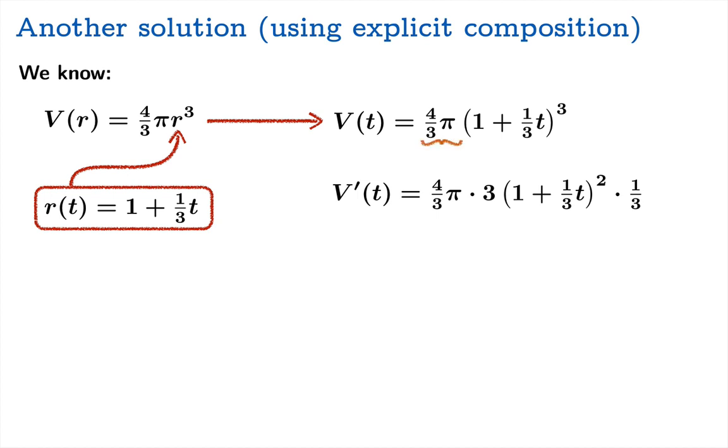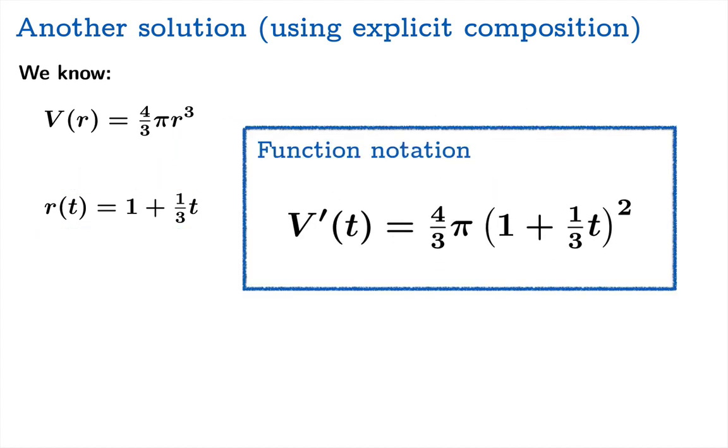And now we can just take the derivative. Now, there's a scalar multiple, so the scalar comes out. There's something cubed. The power rule says that should be three-something squared. And then the chain rule says we have to take the derivative of what's inside with respect to t, so that's going to be one-third. Now these threes cancel, and here's our explicit formula for v prime of t. Four-thirds pi, quantity one plus one-third t squared.